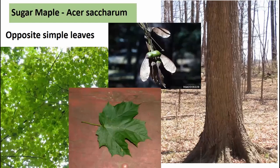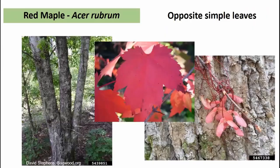Sugar maple is a very shade tolerant species found in both the forest overstory and understory. It has opposite simple leaves, casts enormous shade but can tolerate shade itself, and produces little winged samaras in the fall. It's a hard maple, where soft maples produce their seed in the spring.